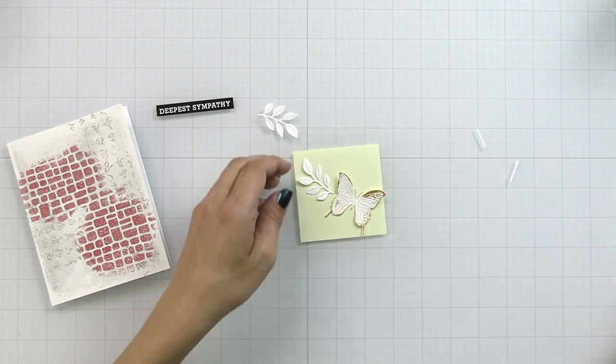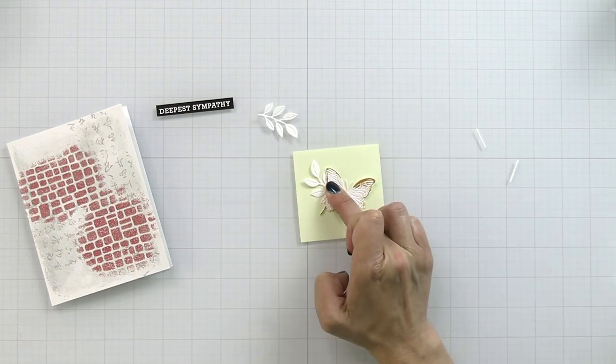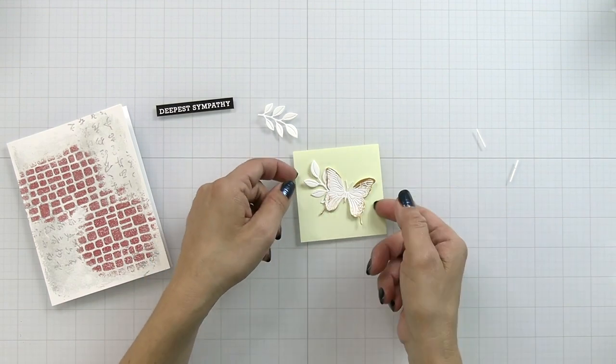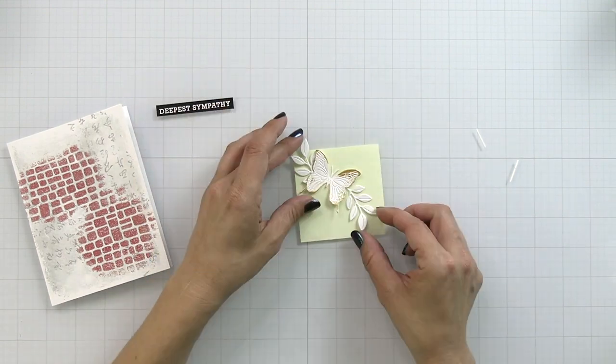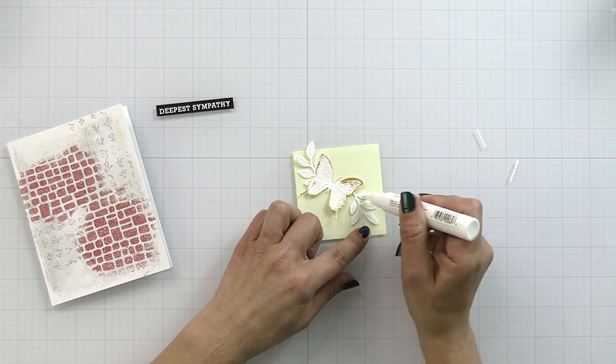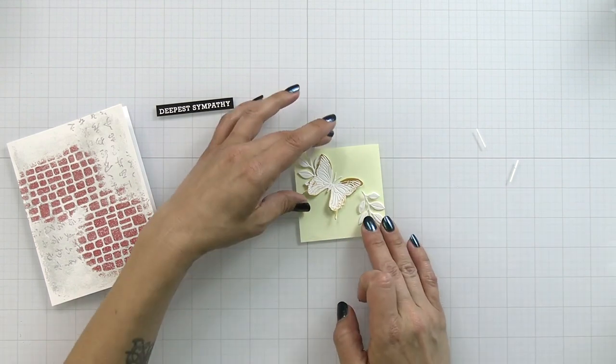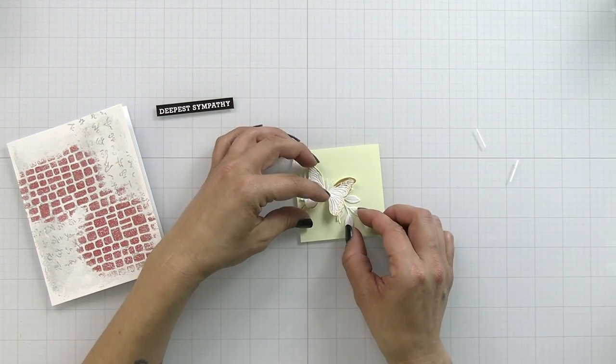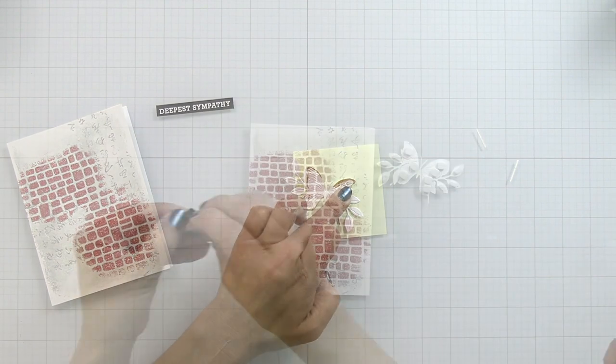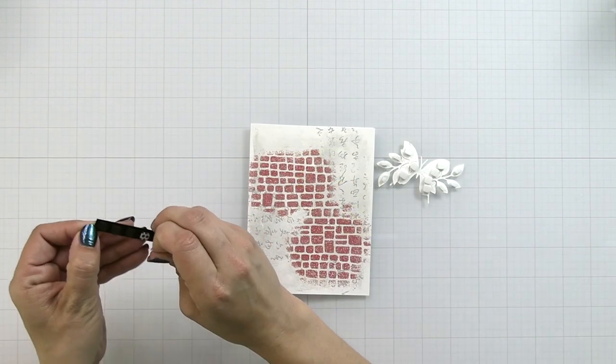I'm taking my leaf die cuts and I just trimmed off the bottom portion or the stem because I didn't want it sticking out too far from the butterfly. Then I'm attaching those with liquid glue to the butterfly. I'm going to have a leaf on both edges to frame my sentiment.